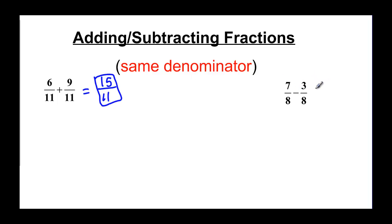Subtracting is no different. We have the same denominator so we're going to make that an 8 and 7 minus 3 is going to be 4. Always remember to reduce your fractions so 4 over 8 is one half.